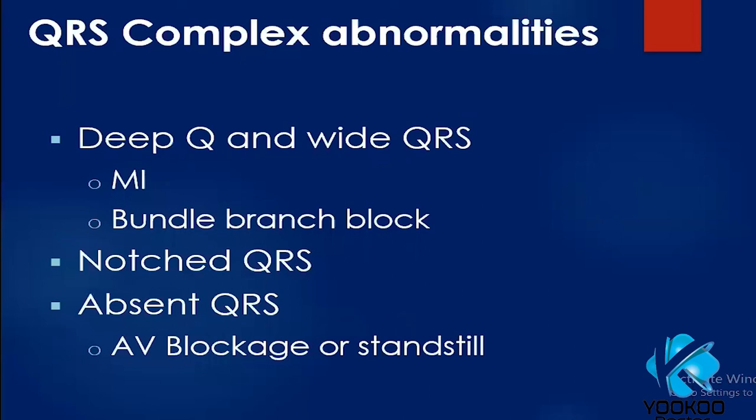Abnormalities of the QRS include deep Q waves or wide QRS complex, indicating myocardial infarction or bundle branch blocks. The QRS complex can also be notched or absent when there is heavy blockade or cardiac standstill.